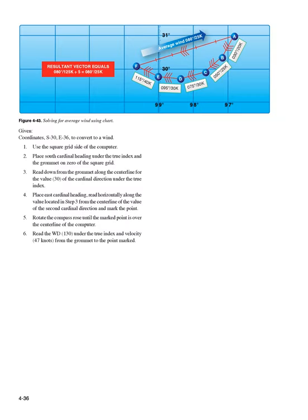Given coordinates S30, E36, to convert to a wind: 1. Use the square grid side of the computer. 2. Place south cardinal heading under the true index with the grommet on zero of the square grid. 3. Read down from the grommet along the center line for the value 30 of the cardinal direction under the true index. 4. Place east cardinal heading and read horizontally along the value located in step 3 from the centerline for the value of the second cardinal direction — 36 — and mark the point. 5. Rotate the compass rose until the marked point is over the center line. 6. Read WD — 130° — under the true index and velocity — 47 knots — from the grommet to the marked point.